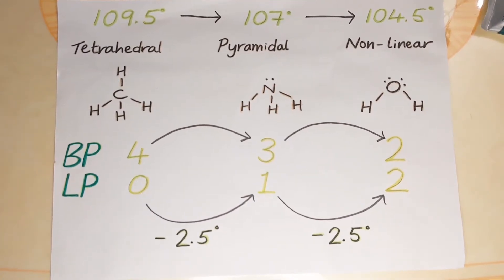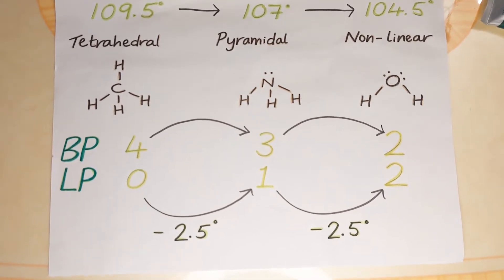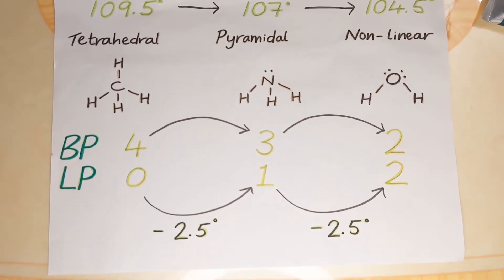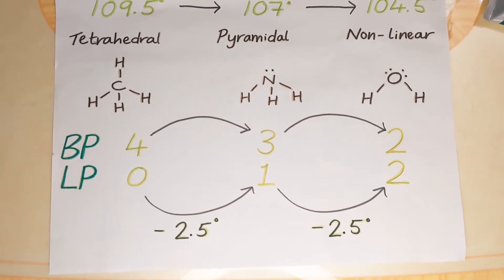Hi guys, in this video I'm going to explain the 2.5 degree rule in VSEPR theory, that is valence shell electron pair repulsion theory.